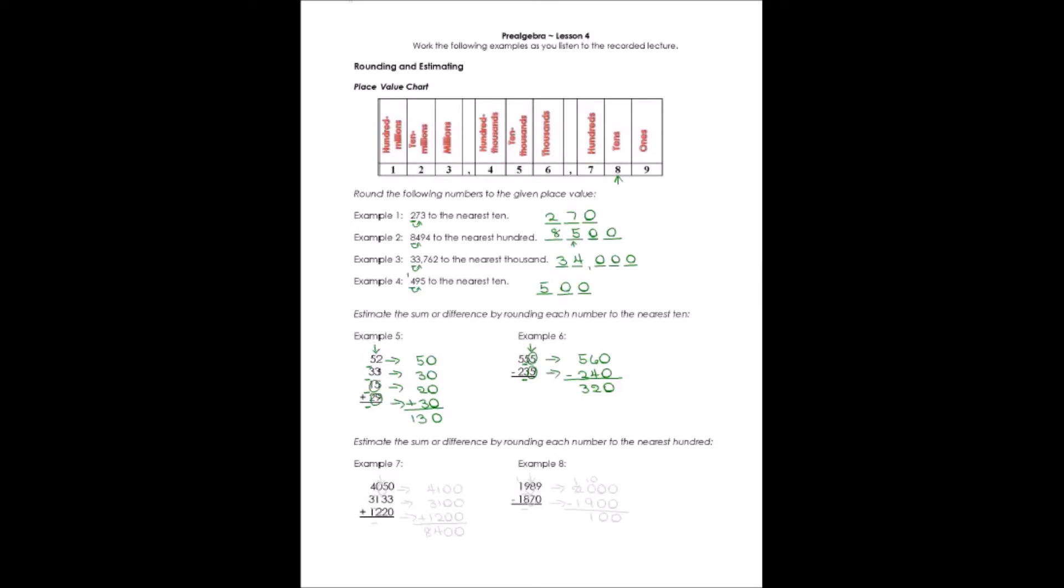Let's take a look at estimating the sum and the difference of example 7 and 8 by rounding to the hundreds place. The hundreds place, in example 7, is a 0, a 1, and a 2. And I'm going to look at the digit next to it. The tens column is the only thing that matters to me. The only one that I need to round up is the first number. It would change 4,050 to 4,100. I'm going to change 3,133 to 3,100 because I didn't have to add to the digit I was rounding to. And 1,220 would round to 1,200.